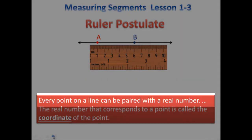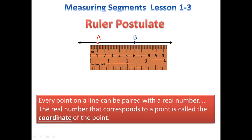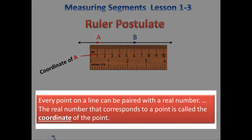The ruler postulate says that every point on a line can be paired with a real number. If we take a look at point A, it is paired with 1. Point B is paired with the number 6. These numbers are specifically called the coordinates of the points.